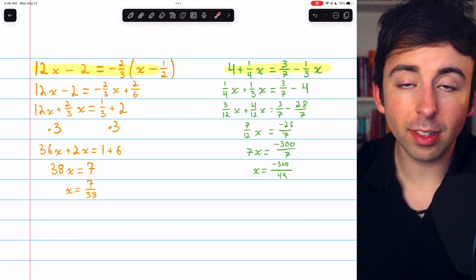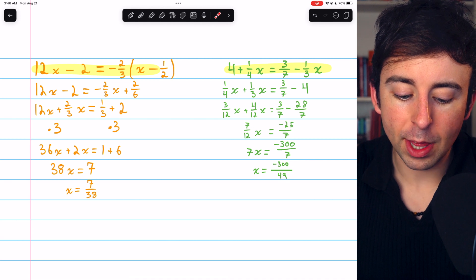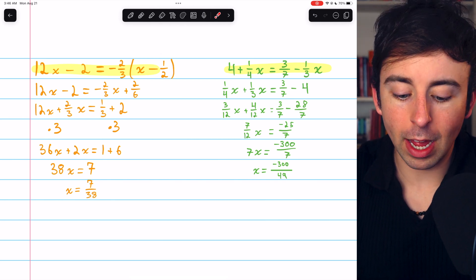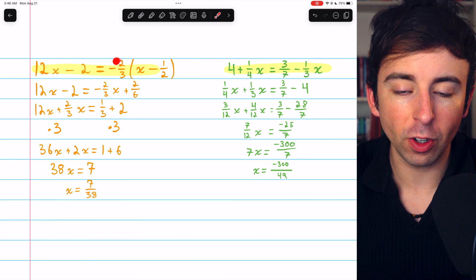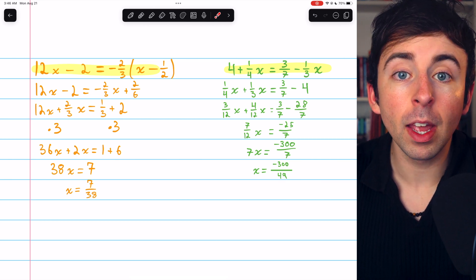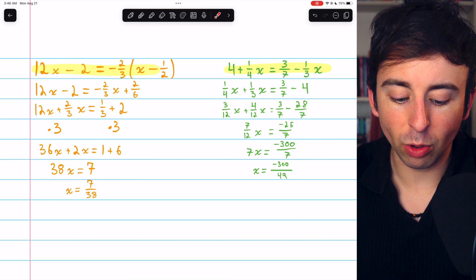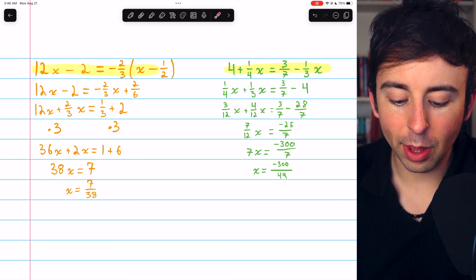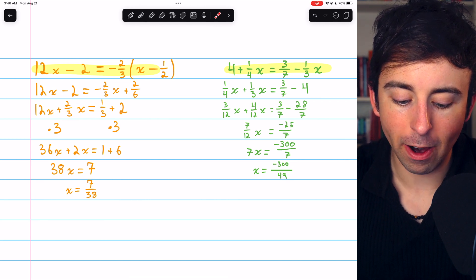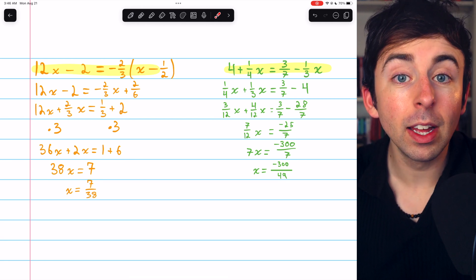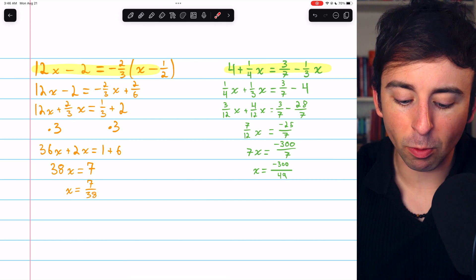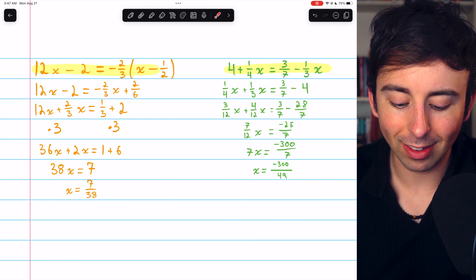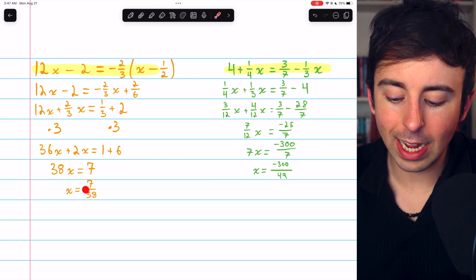For this first equation, you could have multiplied both sides by 3 if you wanted to get rid of this fraction, then you'd have 36x minus 6 equals negative 2 times the parentheses. Or you could have multiplied both sides by negative 3/2 to get rid of this fraction entirely. I decided to just distribute the fraction through the parentheses. So I got 12x minus 2 equals negative 2/3x plus, because negative times a negative, plus 2/6. Then I added 2/3x to both sides, so you see it move over there, and I added 2 to both sides. Then I decided to multiply both sides of the equation by 3 to get rid of those denominators of 3. So after tripling everything, we have 36x plus 2x equals 1 plus 6. And from there, it's pretty straightforward. Divide both sides by 38 to finish solving.